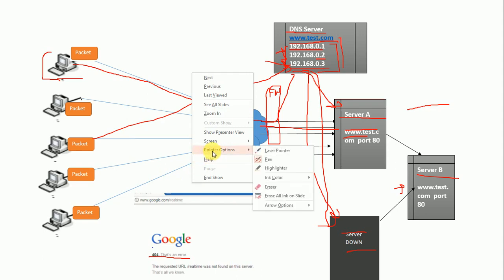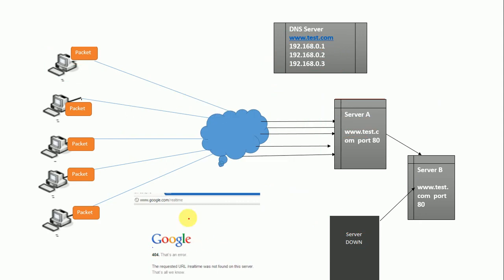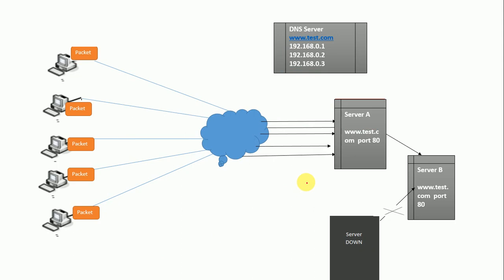So I should be having some smart decision-making device for that. I've erased the DNS setup. Now I need a smart device, so I have replaced my DNS server with F5 LTM. F5 LTM is smart enough to make decisions.